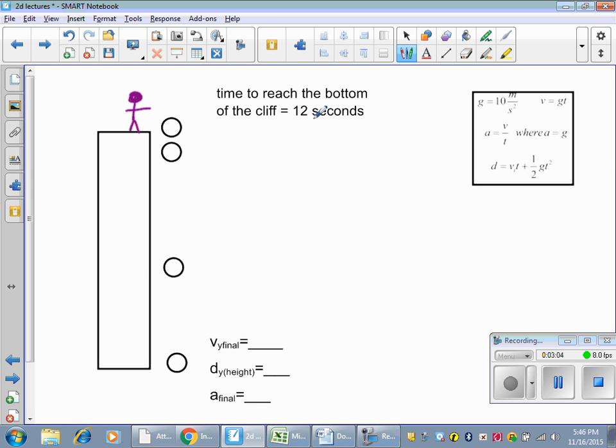Time to reach the bottom of a cliff is 12 seconds. My v_final, how do I do that? Velocity final equals gravity times time. That's equal to 10 times 12 seconds. So I get 120 meters per second is my velocity.